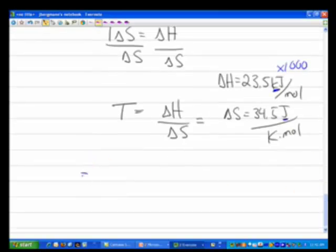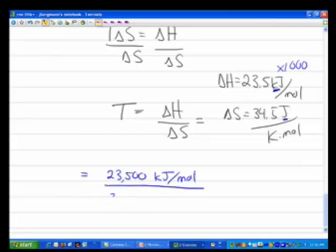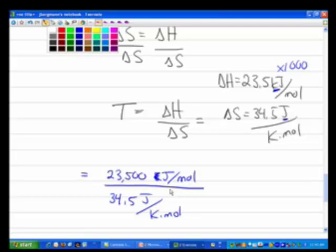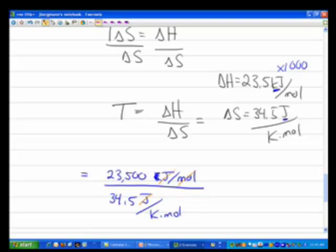The joules are going to cancel, and so will the moles. Since Kelvin is in the bottom of the bottom, you will get it on the top essentially. What number do you get when you divide those terms? 681 Kelvin. If you wanted to convert that to Celsius, you'd subtract 273, and you'd get 408 degrees Celsius.